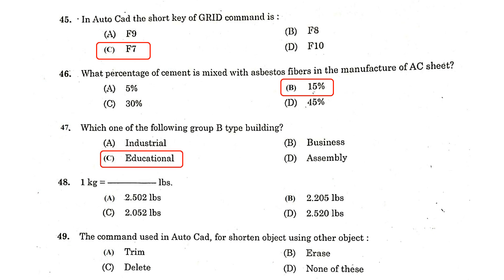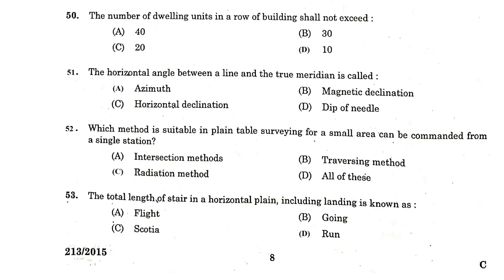1 kilogram is equal to 2.205 pounds. The command used in AutoCAD for shortening an object using other objects is Trim. The number of dwelling units in a row of buildings shall not exceed 10. The horizontal angle between a line and the true meridian is known as azimuth.